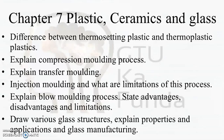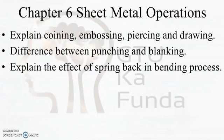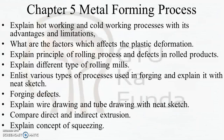For the last chapter, Plastic, Ceramic and Glass Processes, the questions include: difference between thermosetting and thermoplastic, explain compression molding process, explain transfer molding and injection molding with limitations, explain blow molding with advantages and limitations, draw various glass structures, and explain properties, applications, and glass manufacturing.